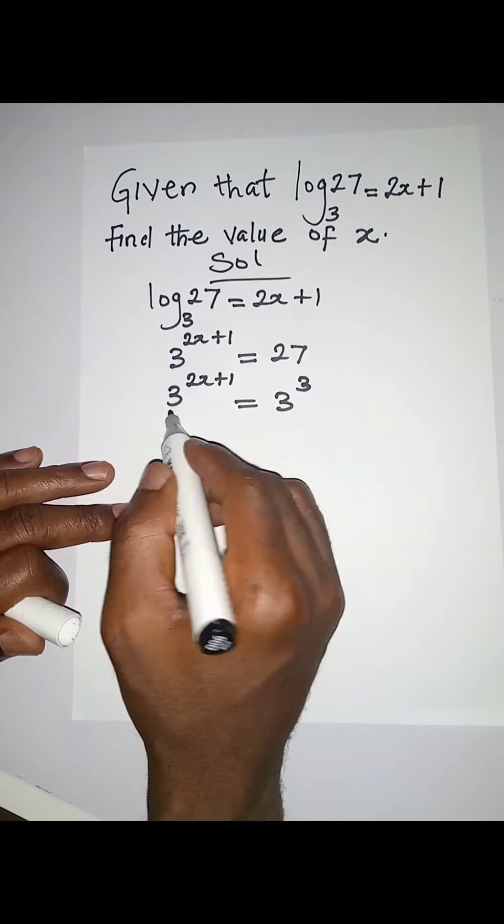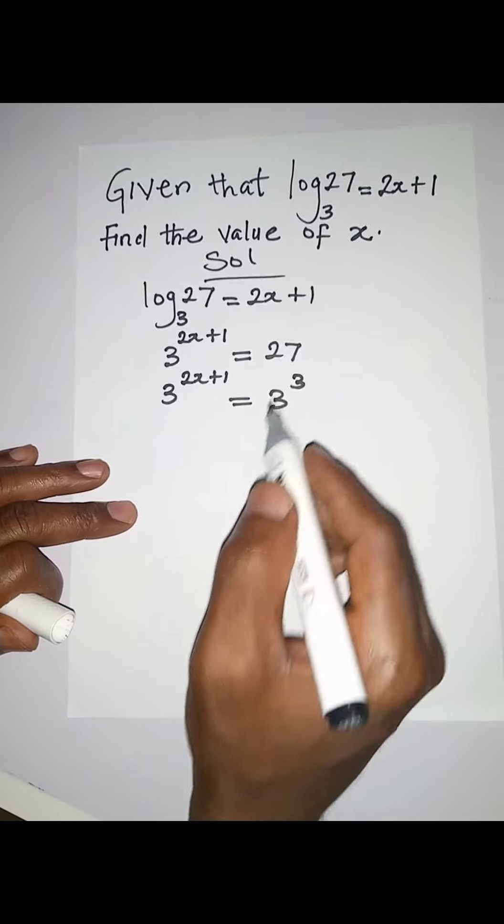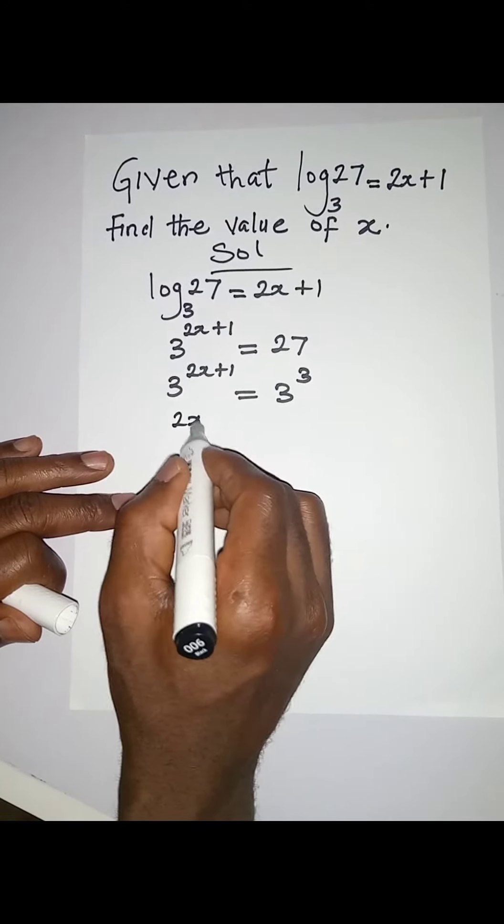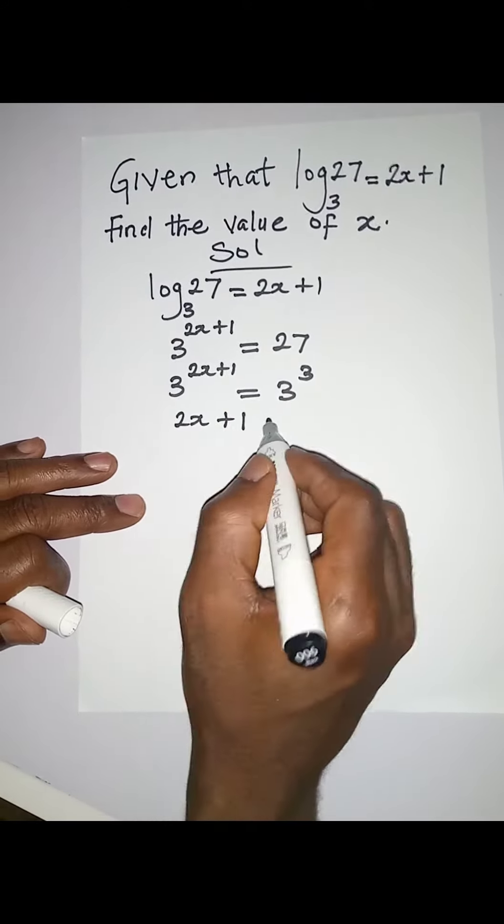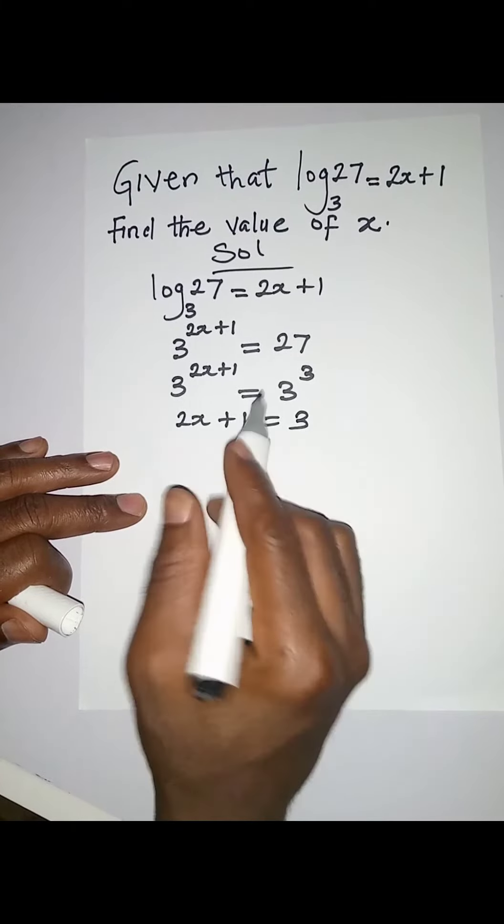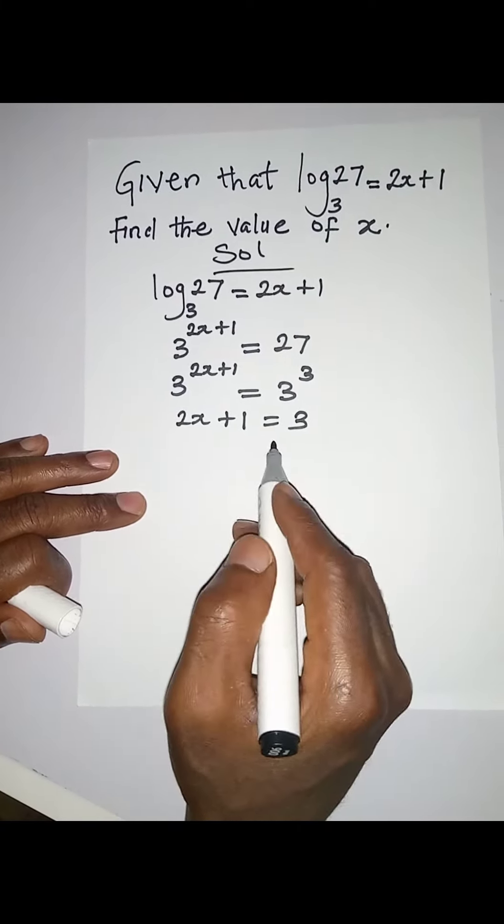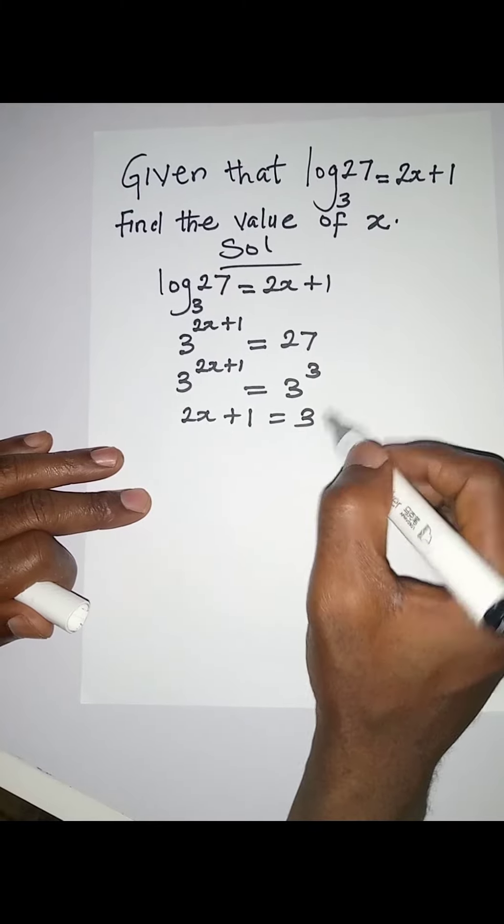2x + 1 = 3. That is, 2x + 1 is the power on the left-hand side and 3 is the power on the right-hand side.